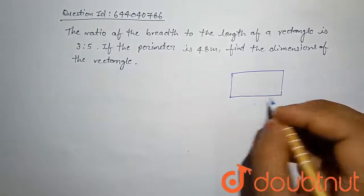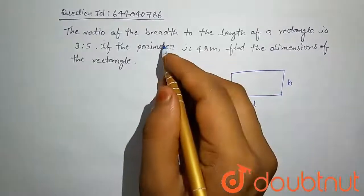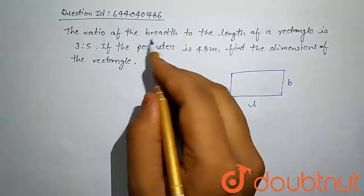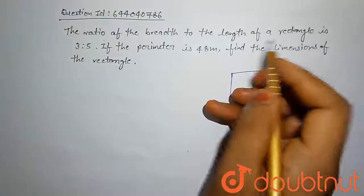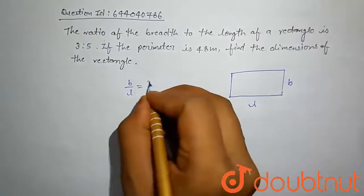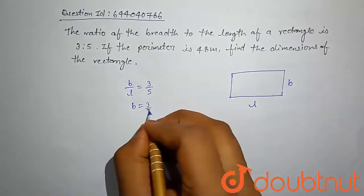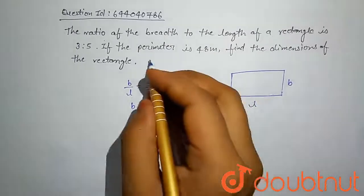This is our rectangle. Length is l, width is b. Here in our problem, ratio of width to length is given 3 to 5. So b by l is equal to 3 by 5.